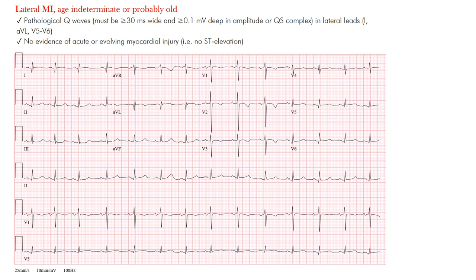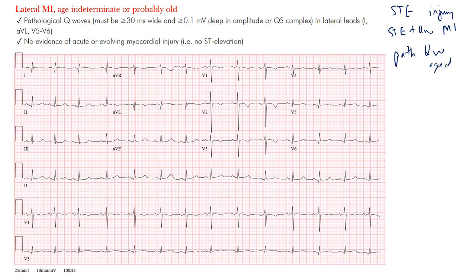So lateral MI — age indeterminate or probably old. Not the acute injury pattern or infarct pattern where we see elevation of the ST segment. In this case, we're looking for pathological Q waves. Remember, if you have ST elevation only, this is more of that injury pattern. If you have ST elevation plus pathological Q waves, we call that the infarction pattern. And if you just have these Q waves, this is where we call it age indeterminate. So three different patterns — this is the one we're looking at.